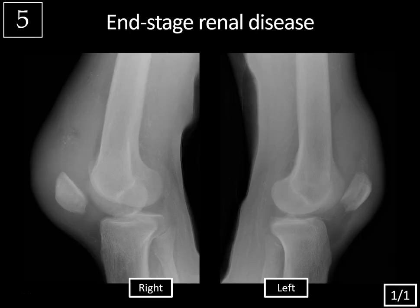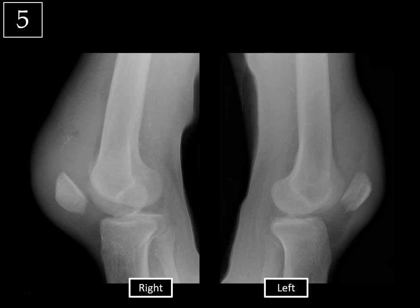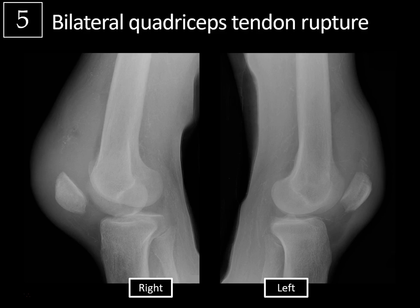Last case — history of end-stage renal disease. We're looking at lateral views of both knees. There is severe prepatellar and suprapatellar soft tissue swelling bilaterally, as well as large suprapatellar joint effusions, more pronounced on the right. The patellae are low-lying bilaterally — abnormally low — known as patella baja (the opposite, a high-riding patella, is patella alta). There is also vague calcification in the expected region of the quadriceps tendon bilaterally. This patient had bilateral quadriceps tendon rupture in the setting of end-stage renal disease.